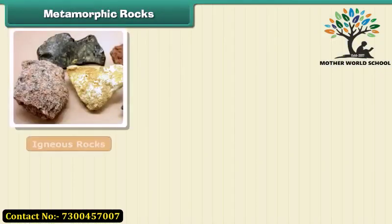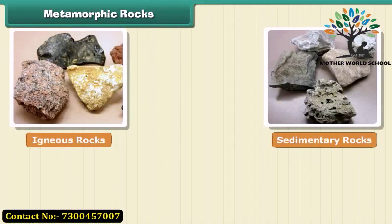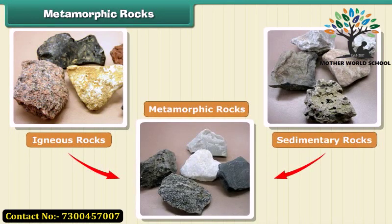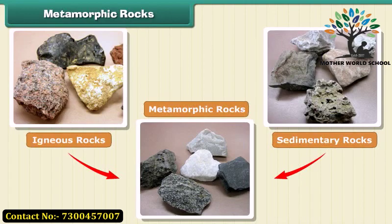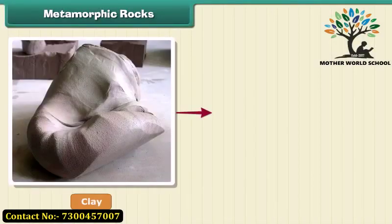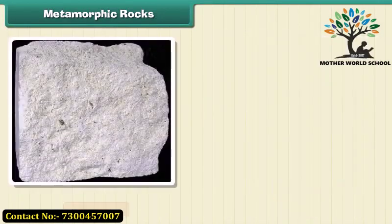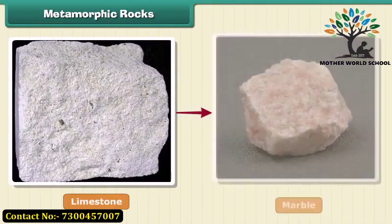The third type of rock is made out of the first two types. These are metamorphic, or changed, rocks. Igneous and sedimentary rocks can change into metamorphic rocks under great heat and pressure. For example, clay changes into slate and limestone into marble.